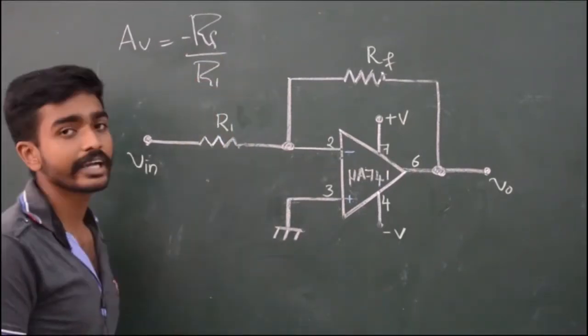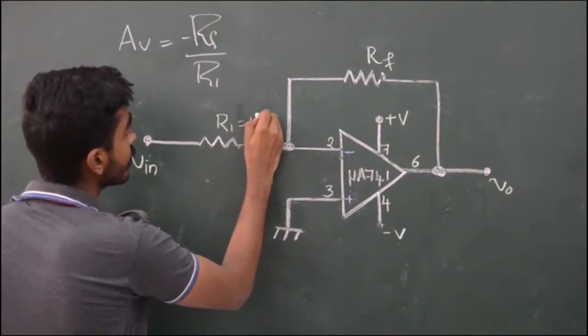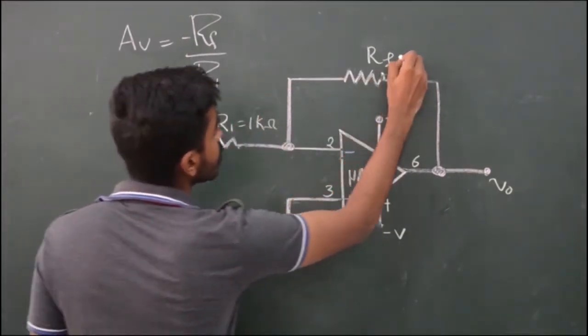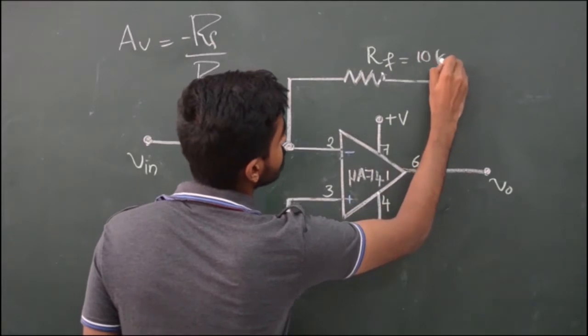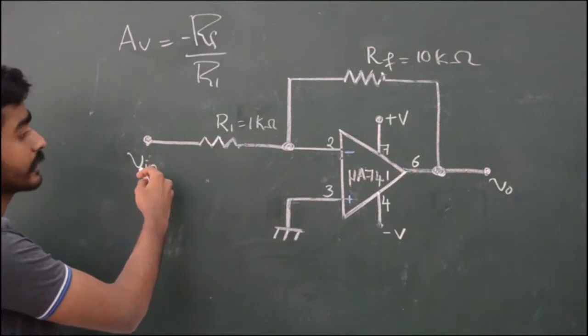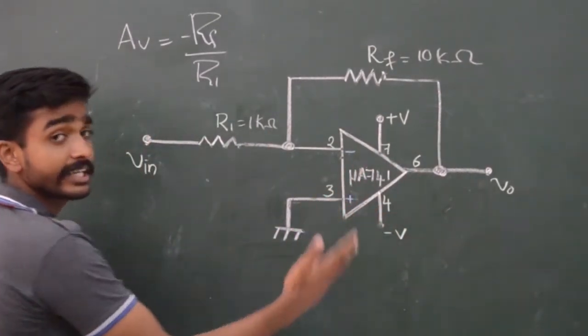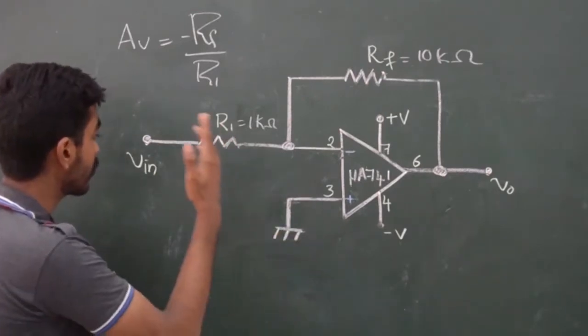If we need a gain of 10, we will set R1 equal to 1k and Rf equal to 10k. The output voltage would be 10 times the input voltage Vin. The output is 180 degrees out of phase from the input voltage.